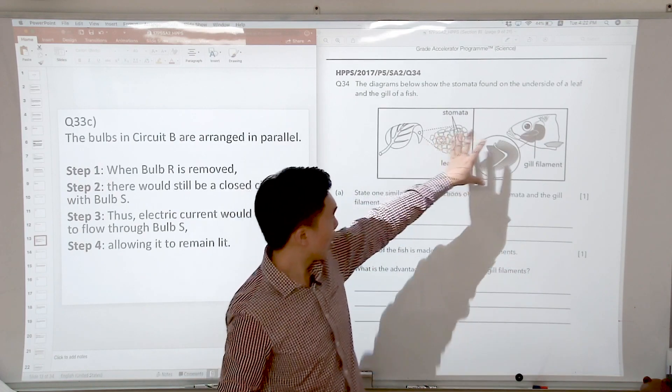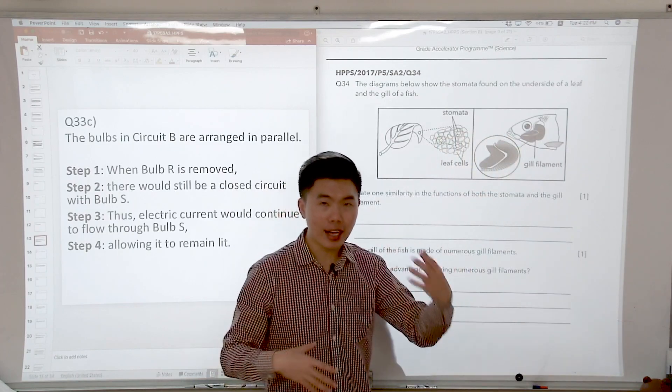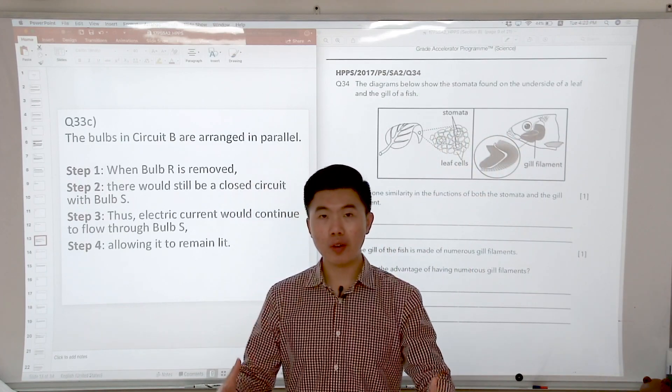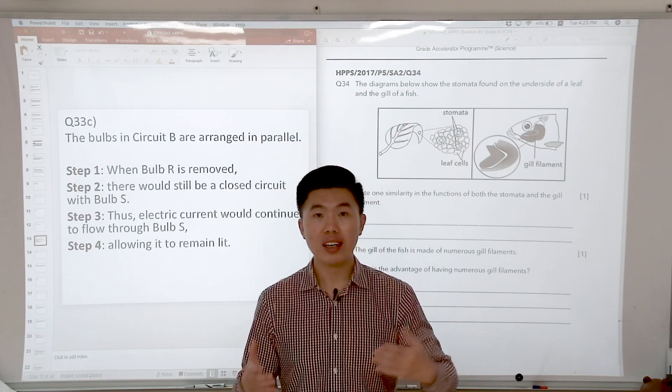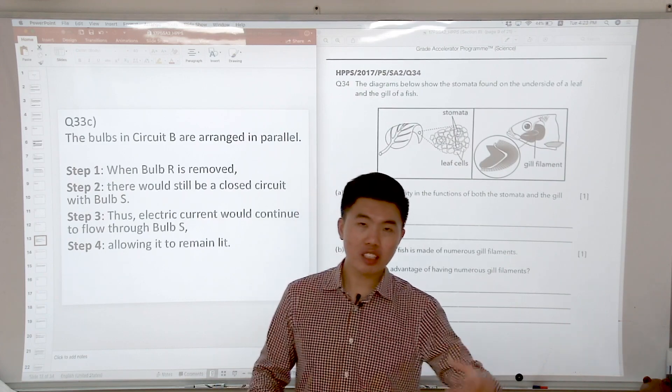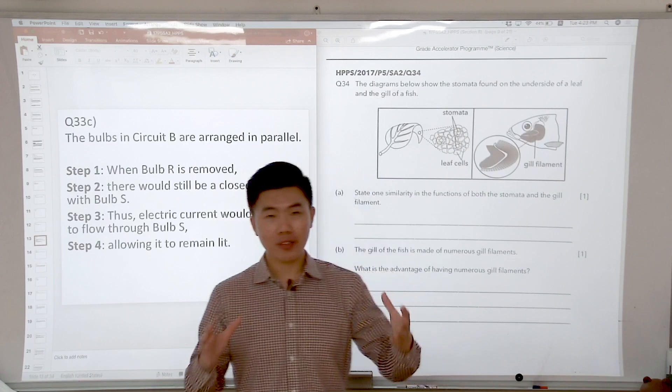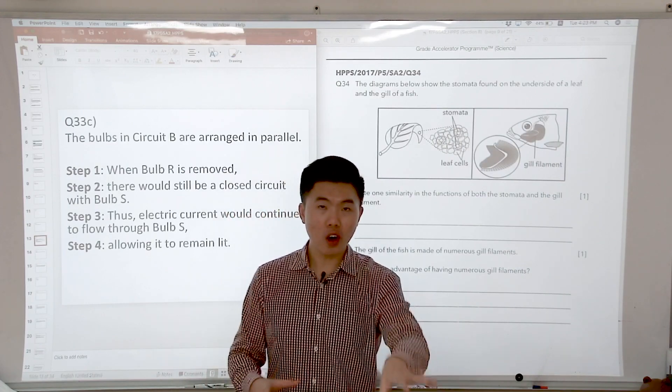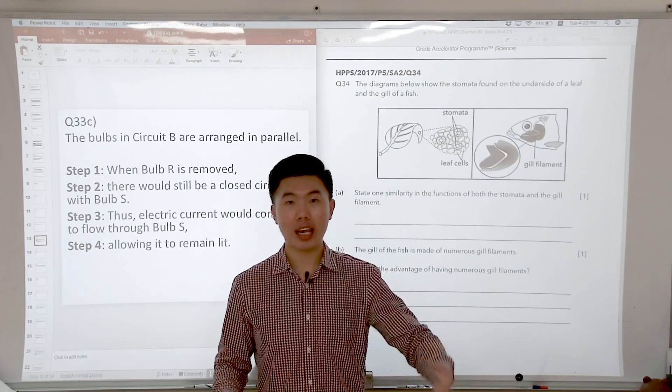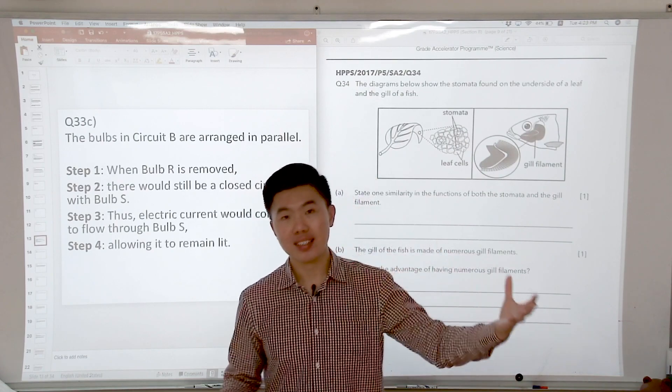Similarly, the gill filament increases the exposed surface area of the gills for faster exchange of dissolved gases. Why do we mention dissolved gases? Because the fish takes in dissolved gases from the water. It's not able to take in gases from the surrounding air.